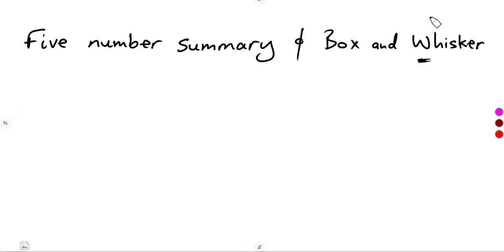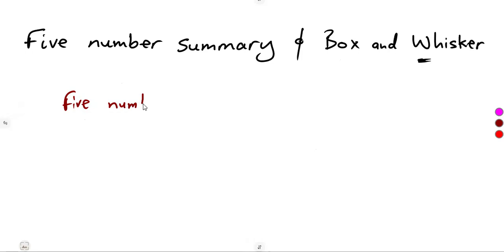In this case, we are going to consider the five-number summary as we have a distribution or certain data that we are given. A five-number summary is a method for summarizing that distribution. We're also going to consider the box and whisker plot. This is a recap from our grade 10 so that we do not miss any part.